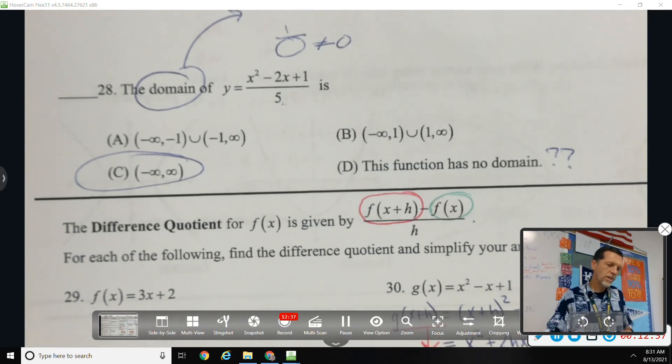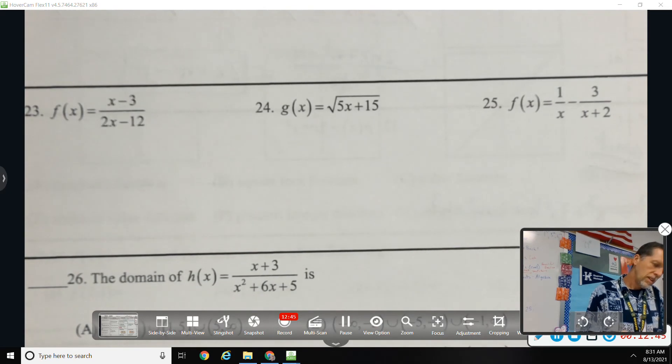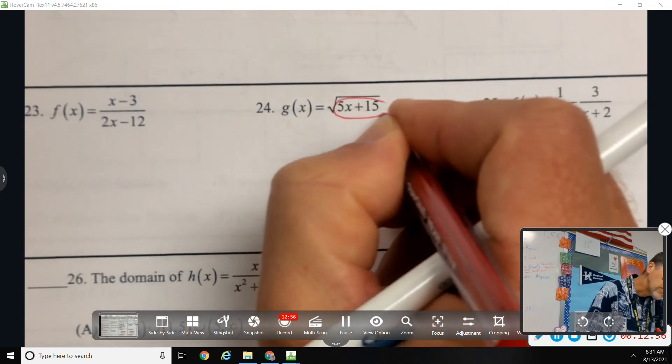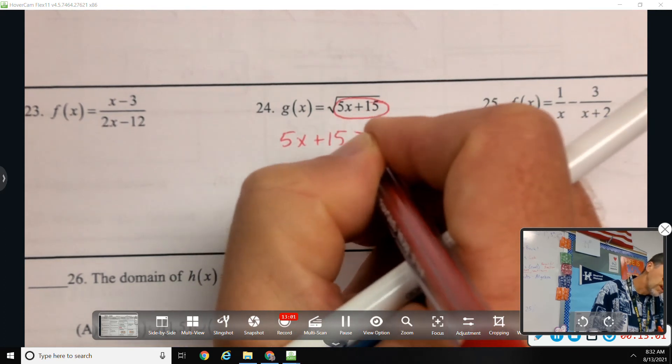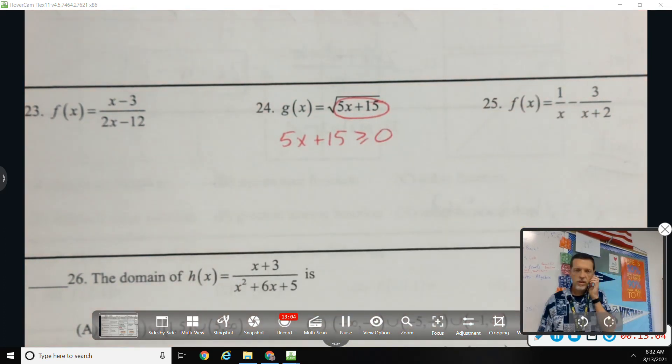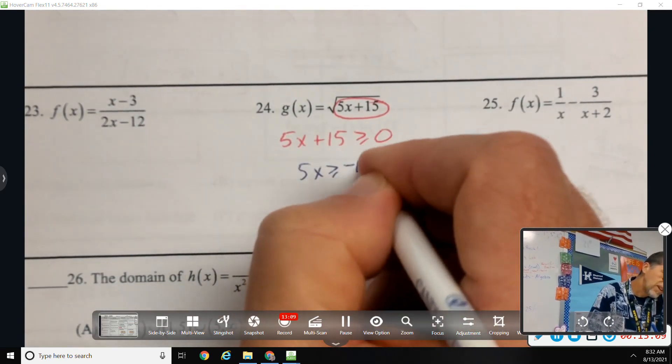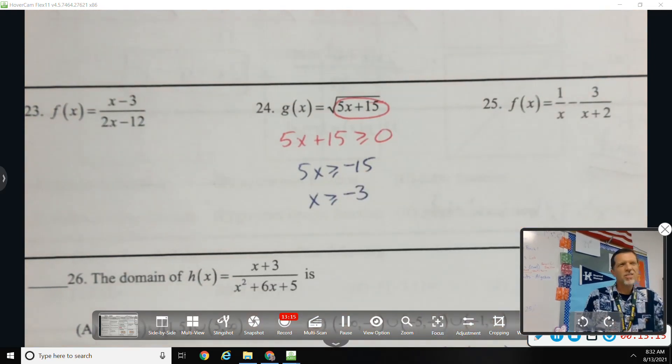24. Okay, another domain problem. Well I wish the directions were a little clearer, but it's in the domain section so I think we can assume that's what it wants us to do. Square root means whatever's under the square root has to be greater than or equal to 0. So 5x plus 15 greater than or equal to 0. 5x greater than negative 15. x greater than or equal to negative 3. That's sort of the answer.